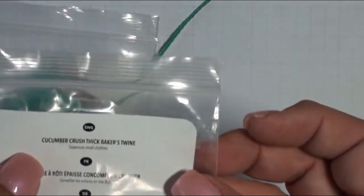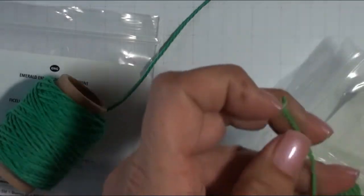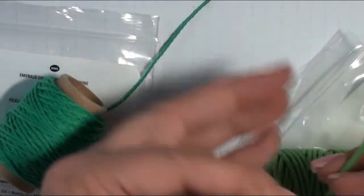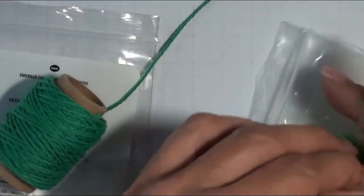Then, remember, this is called Solid Baker's Twine right here. Then we have the Cucumber Crush Thick Baker's Twine. And this is where you're going to see the big difference between both of these.